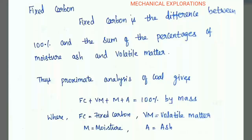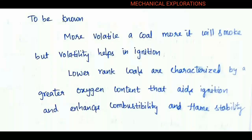Fixed carbon is the difference between 100% and the sum of the percentage of moisture, ash, and volatile matter. Thus the proximate analysis of the coal is given by: Fc + Vm + M + A = 100% by mass. Where Fc is fixed carbon, Vm is volatile matter, M is moisture, and A is ash.